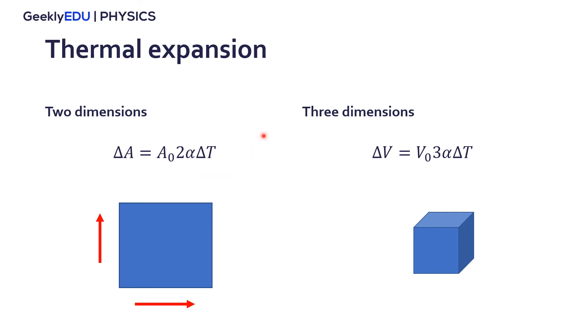We can bring the same concepts, the same logic to three dimensions. So the variation in volume is the initial volume times three times the thermal expansion coefficient times the temperature. And it's the same logic, we have three dimensional expansion now, so we multiply this coefficient by three because it expands in three directions.